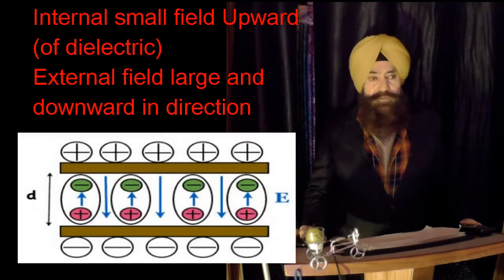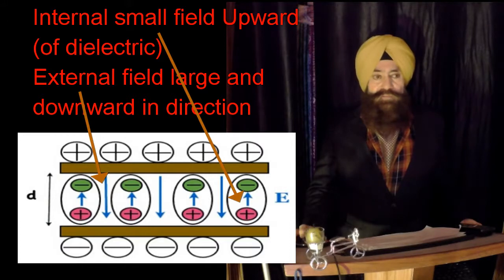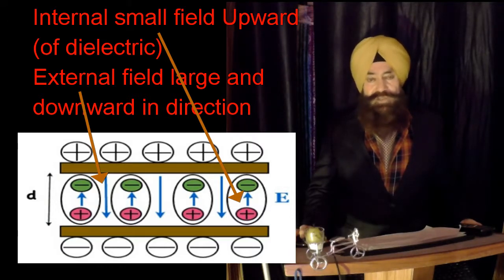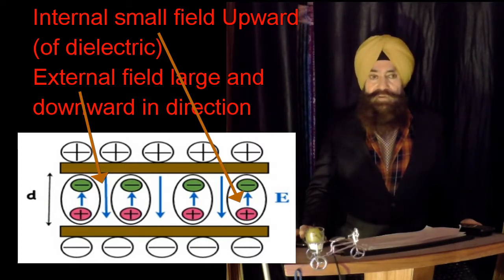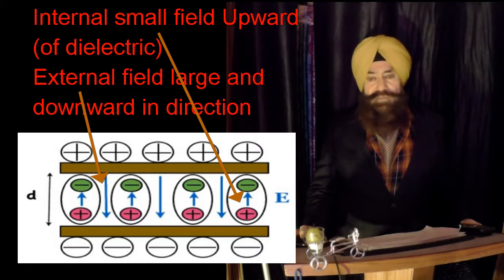Now, next we suppose that this material is placed between the two charge plates. Now, what will happen? The molecules will align themselves to exert maximum force of attraction of the charge plates. Now, there are two fields will exist. One is the external field and another will be the field due to the alignment of the dipoles, again positive to negative.